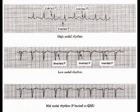Here is the ECG of high nodal rhythm. The above ECG shows high nodal rhythm with an inverted P wave. The middle ECG shows low nodal rhythm — there is an inverted P wave after the QRS complex. The last ECG shows mid nodal rhythm — there is a P wave buried in the QRS complex.